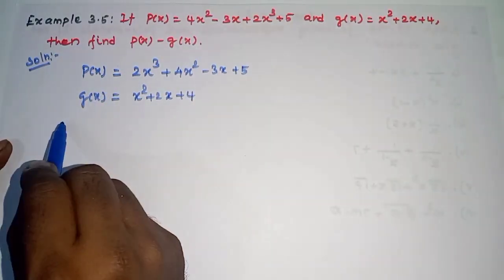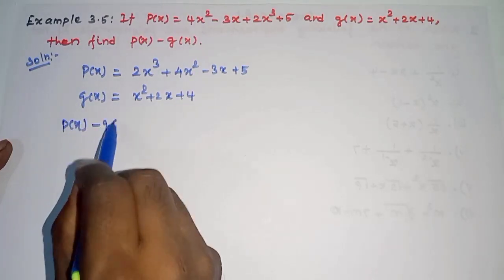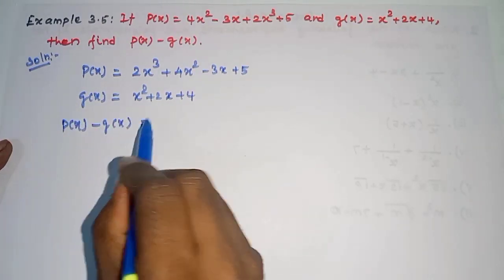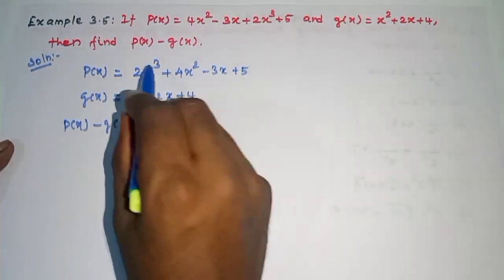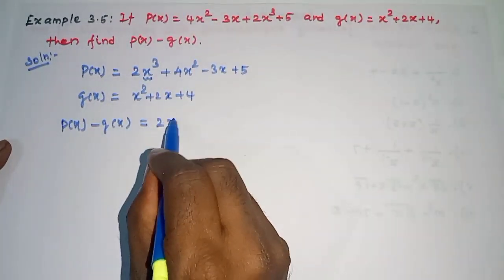Already in the previous example we explained corresponding powers. Q of x has no x cube term, so we get 2x cube as it is.